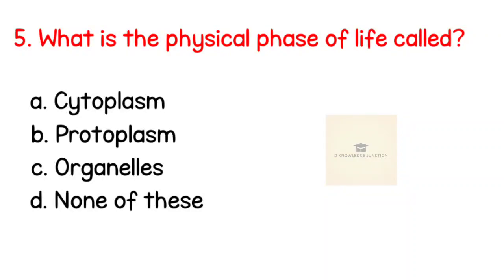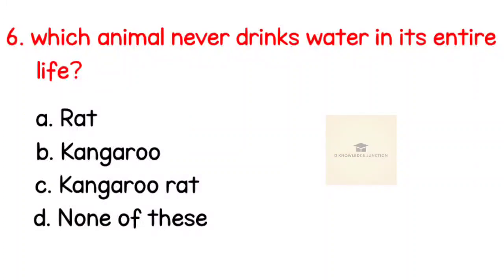Fifth question: What is the physical phase of life called? Right answer is protoplasm. Sixth question: Which animal never drinks water in its entire life? Right answer is kangaroo rat.